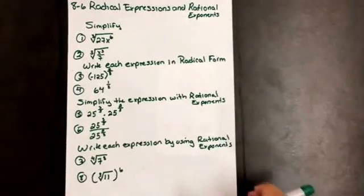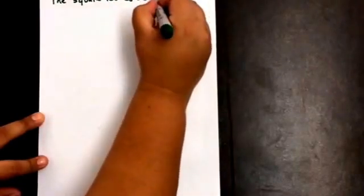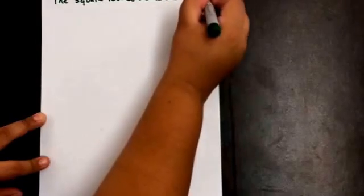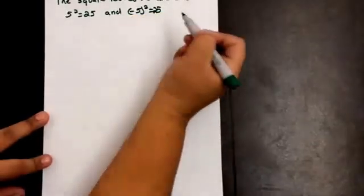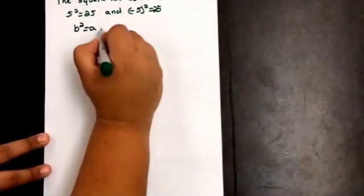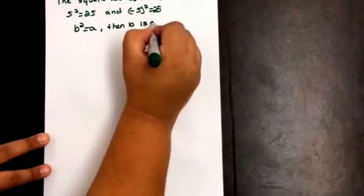Radical Expressions and Rational Exponents. You all know how to square a number. The reverse operation of squaring a number is finding the square root. For example, the square root of 25 is 5 and negative 5, because 5 squared equals 25 and negative 5 squared equals 25. In general, if b squared equals a, then b is a square root of a.